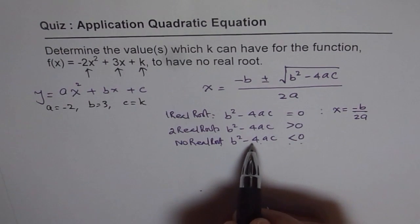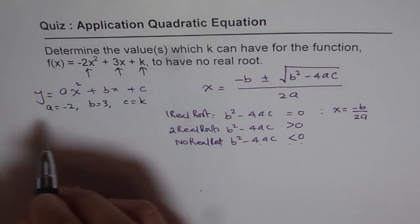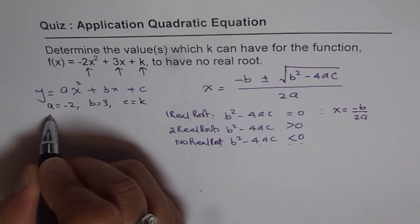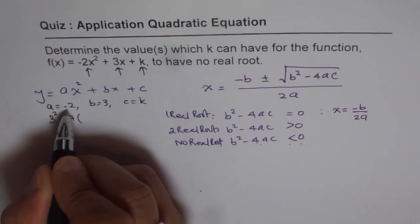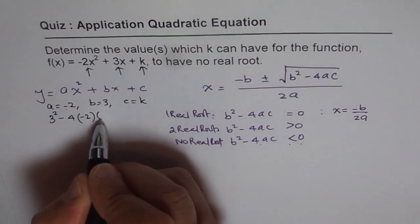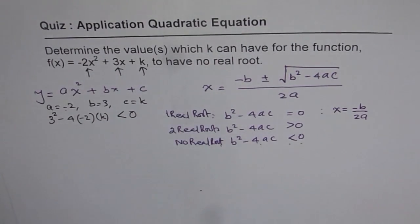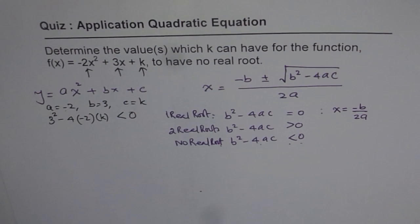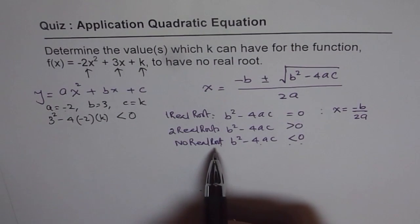For no real root, we want b² - 4ac to be less than 0. We basically want 3² minus 4 times a (which is -2) and c (which is k) to be less than 0. This is what we want. We are going to solve for this particular equation and that is going to give us the values of k for which no real roots are possible.